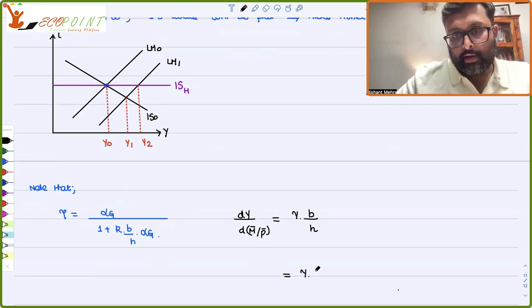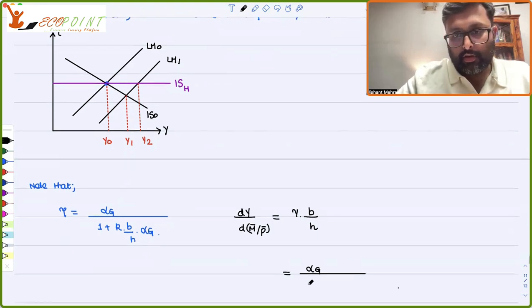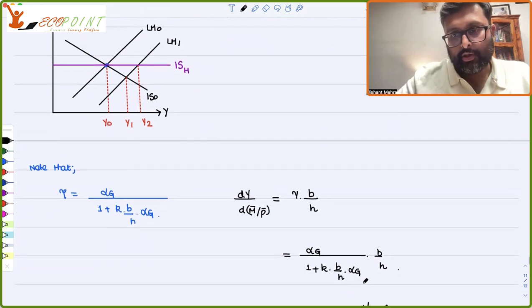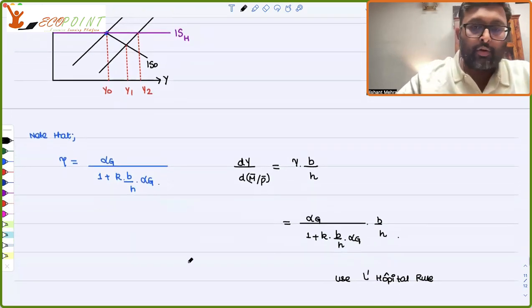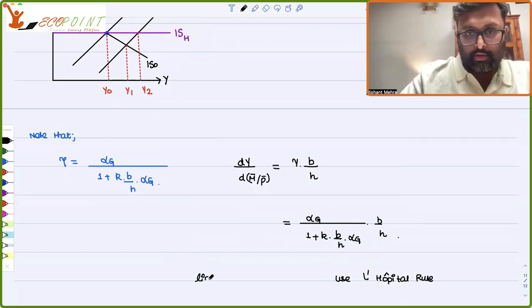Basically, I can write in terms of gamma, in place of gamma, I can write this. Alpha G upon 1 plus K B by H alpha G into B by H. Now, I want alpha G to go towards 0. Oh, sorry, to go towards infinity.